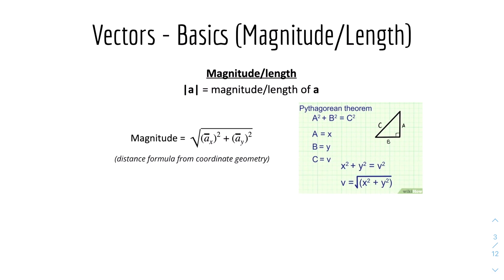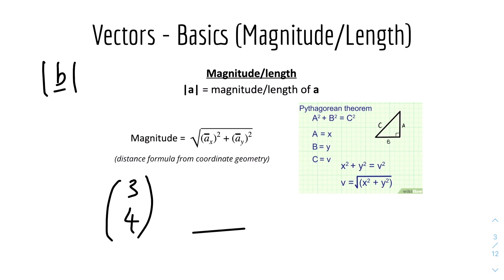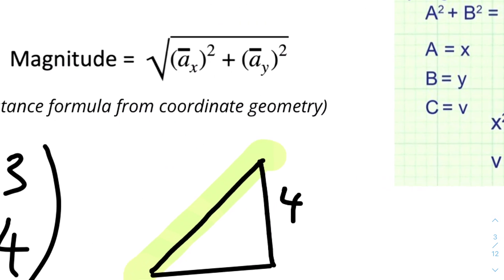Then we have the magnitude or the length. The notation for it will be this modulus symbol between the vectors. Like the magnitude of B will be written this way — it will be the magnitude or the length of the vector. The formula for that is basically just Pythagoras' theorem, or basically the distance formula from coordinate geometry. So think of it this way: if we have a vector like (3, 4), where 3 means in the x direction and 4 means in the y direction, you can basically use Pythagoras to work out the length, which in this case is 5.